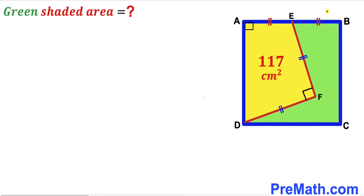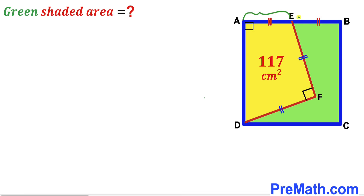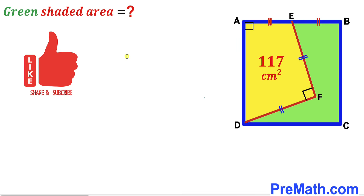Welcome to pre-math. In this video we have square ABCD along with two perpendicular line segments EF and DF, as shown in the diagram. This gives us two shaded regions: a yellow shaded region and a green shaded region. The area of the yellow shaded region has been given as 117 centimeters square.